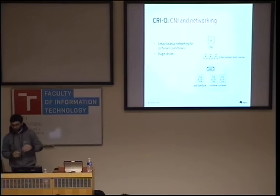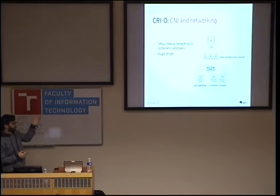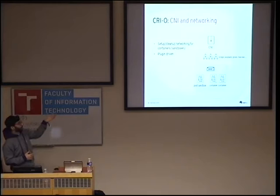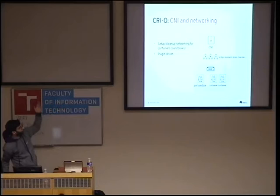Network is provided by the CNI, which is also used by Kubernetes. It's basically plugin-driven. For the basic case we use it for creating VET pairs and assigning them to the container and to the host. There are many plugins we can use, like Bridge, Loopback, IPVLAN, MACVLAN, and others.